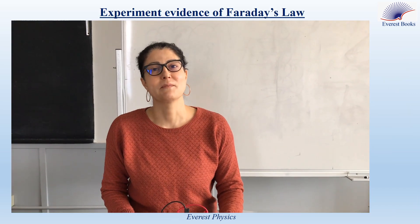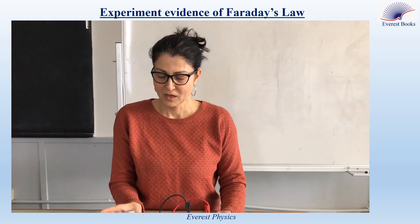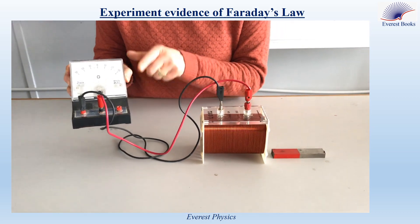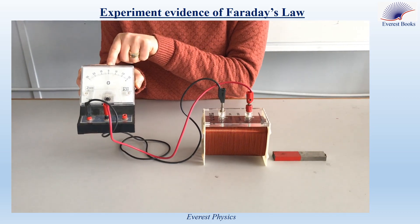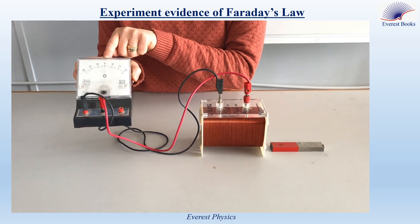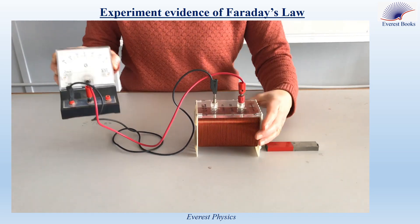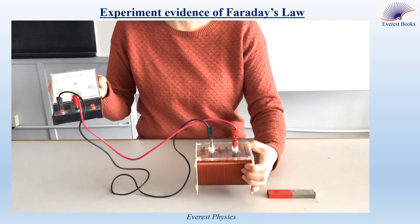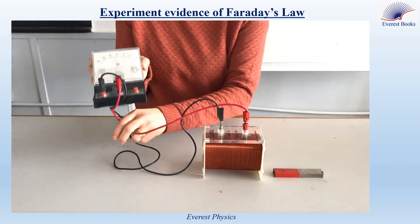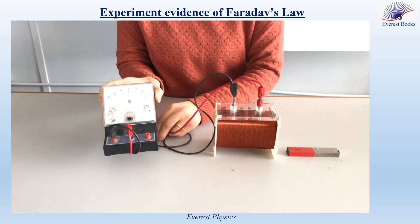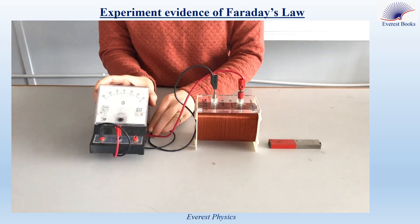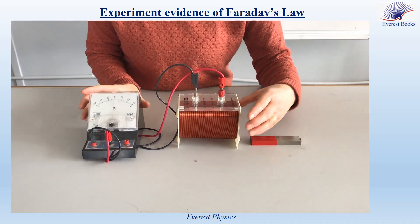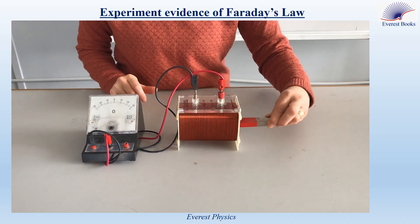This experiment is about Faraday's law. We have a galvanometer set to measure electric current. The zero of the galvanometer is in the middle of its screen. The galvanometer is connected across the terminals of a copper coil. This closed circuit does not include a source of electromotive force. In a previous episode, we explained the electromagnetic induction phenomenon.